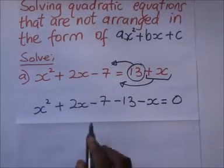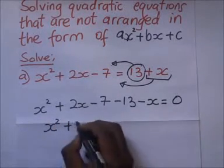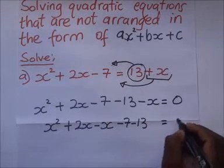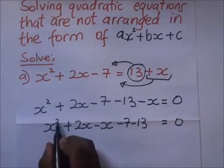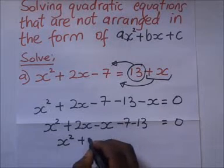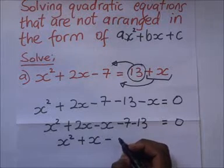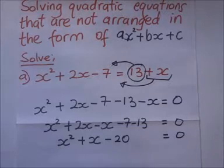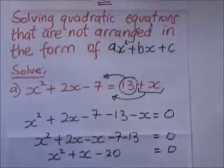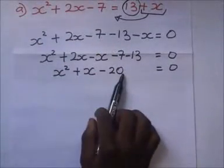When they all come this way, we start collecting like terms. So it's going to become X squared plus 2X minus X, which gives us plus X. Then negative 7 minus 13 gives us negative 20, all equal to zero. So at last, we have formulated a quadratic equation in the form AX squared plus BX plus C. Now we can go ahead and factorize it.